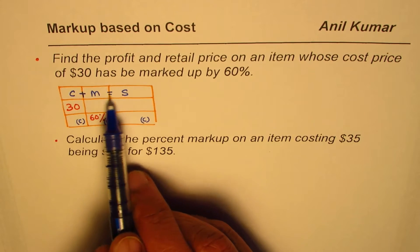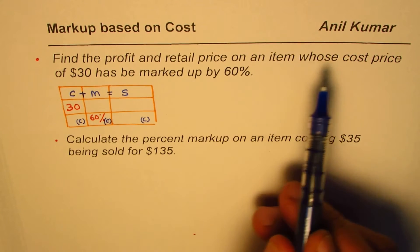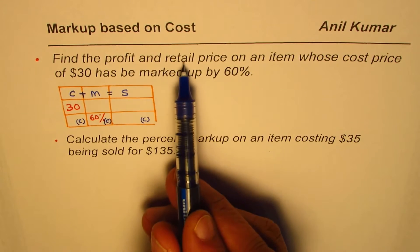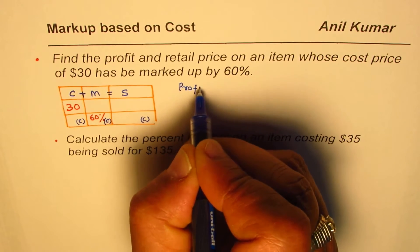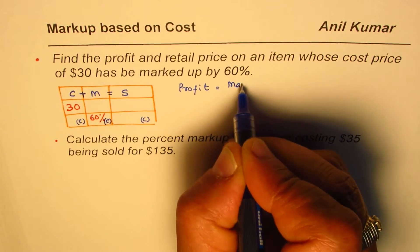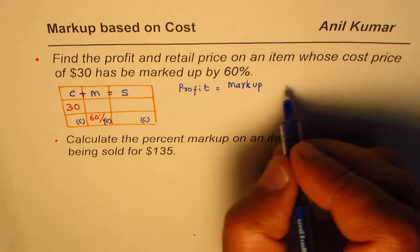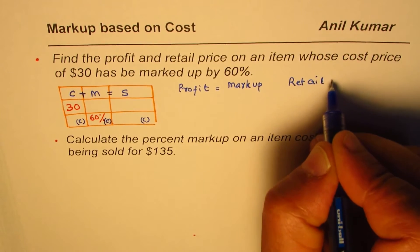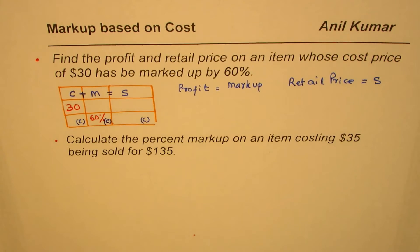Let's understand these two terms — profit and retail — with reference to our equation: cost plus markup equals sales. The markup gives you the profit, so profit is really the markup (M) for us. The retail price is the sales price (S) in this equation — it is the price at which they are selling the item.